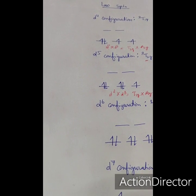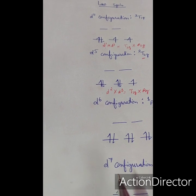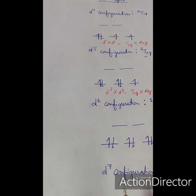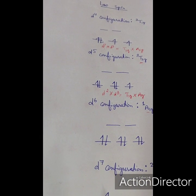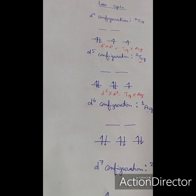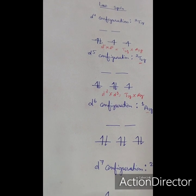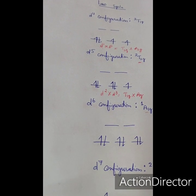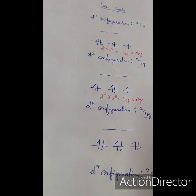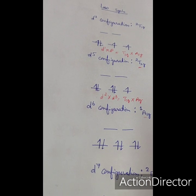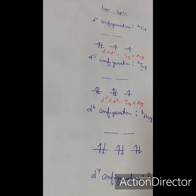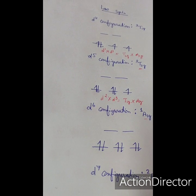These Tanabe-Sugano diagrams are applicable to both high-spin (weak field) and low-spin (strong field) complexes, unlike Orgel diagrams which only cover weak field complexes. To draw a Tanabe-Sugano diagram, it is necessary to determine the ground state term symbols conceptually. Understanding how to derive these terms — rather than just memorizing them — is essential for working with Tanabe-Sugano diagrams for both weak field and strong field octahedral complexes.